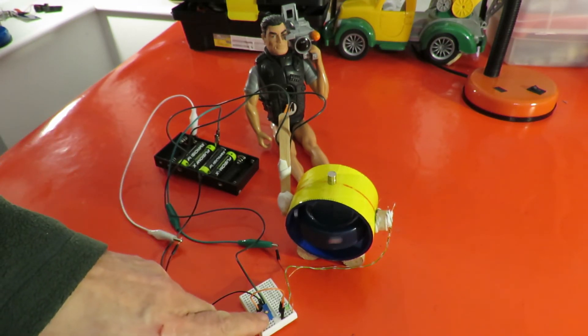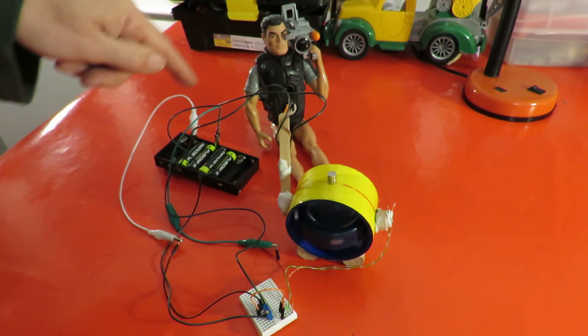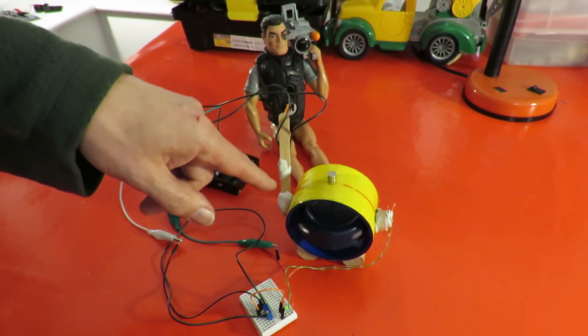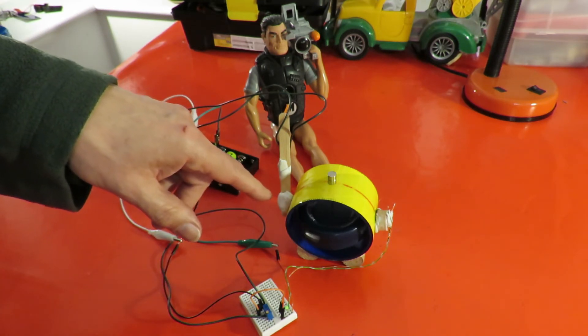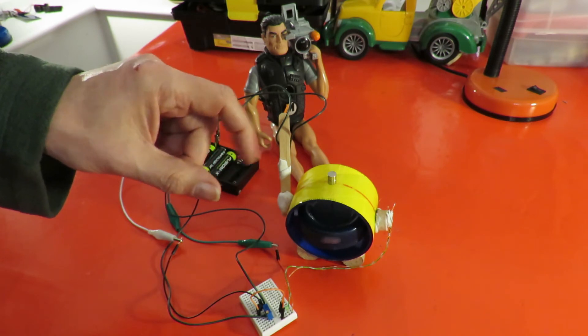I've actually got a variable resistor or potentiometer there in circuit with the switch just so we don't have full power going through the switch because sometimes they weld themselves together if there's too much of a spark.